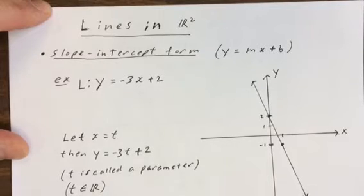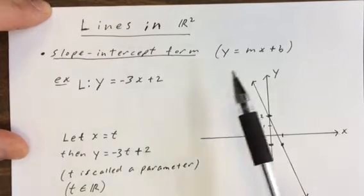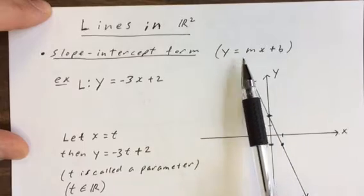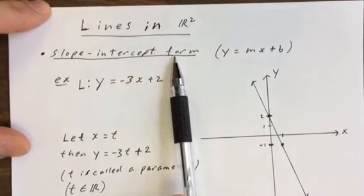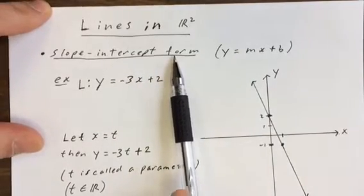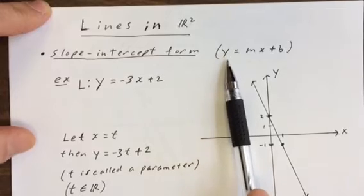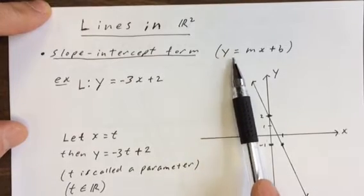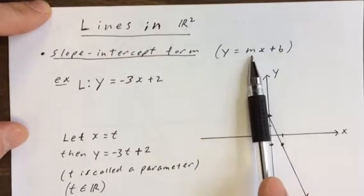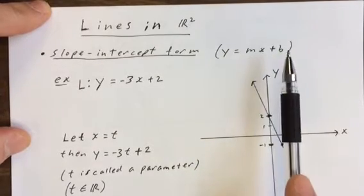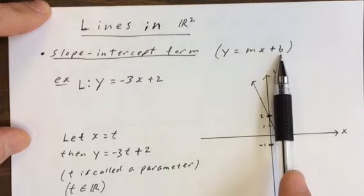The way we're going to start is with something we know: the equation of a line in slope-intercept form. We recall this from grade 9 — y equals mx plus b, where m is the slope and b is the y-intercept.